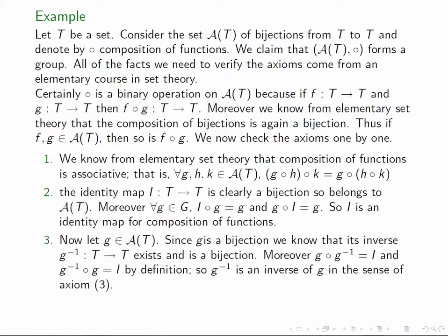Finally, we need to show that every element has an inverse. If we take a bijection, then again, a well-known fact from set theory tells us that if g is a bijection, then it has an inverse for composition of functions. In other words, there exists a map g inverse such that g circle g inverse is I and g inverse circle g is equal to I. So the set theoretic inverse is an inverse in the group theoretic sense. So the set of all bijections on a set forms a group.